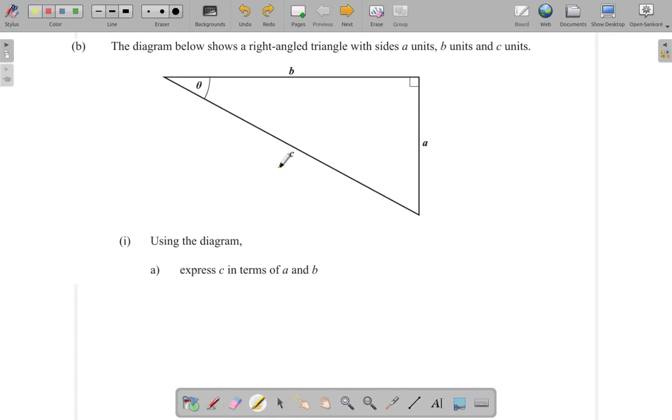You can see them. It says A units, this one, B units long, and C units long. All right.